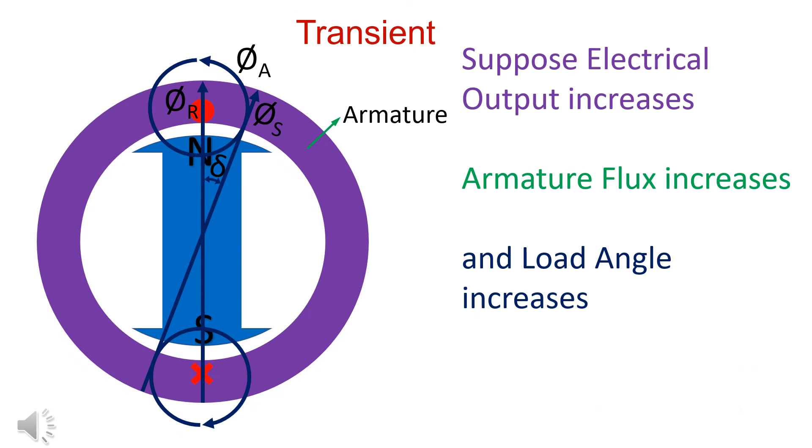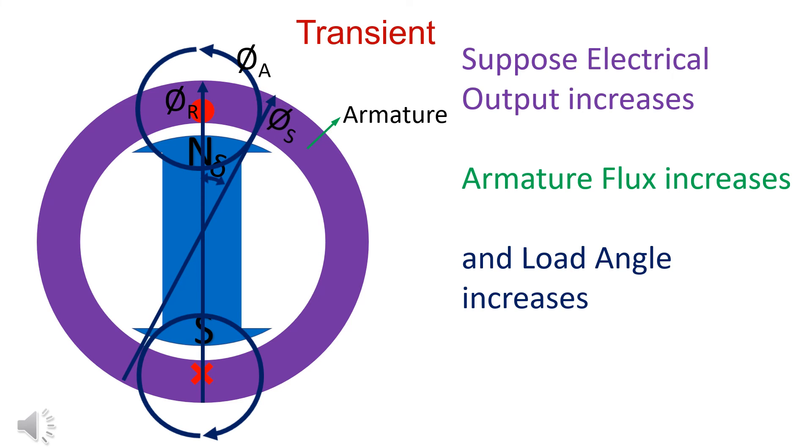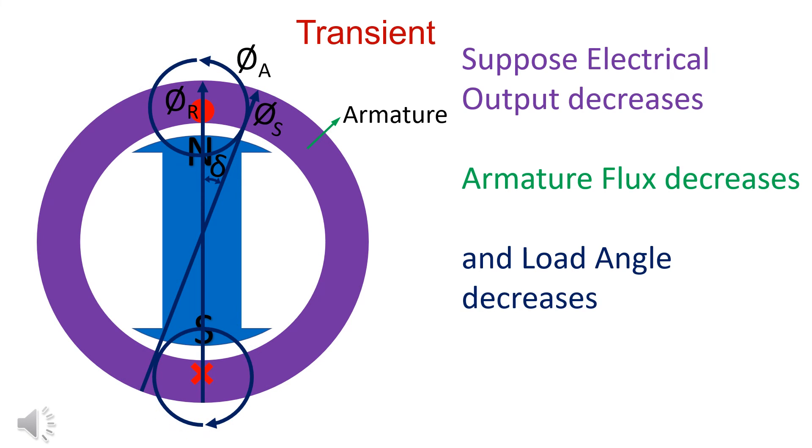When electrical output increases, armature flux increases resulting in increase in load angle delta. When load decreases, armature flux decreases and load angle decreases.